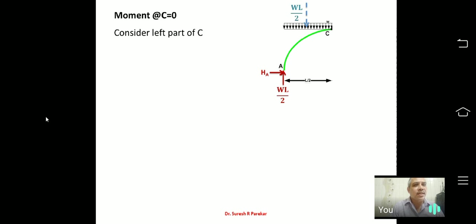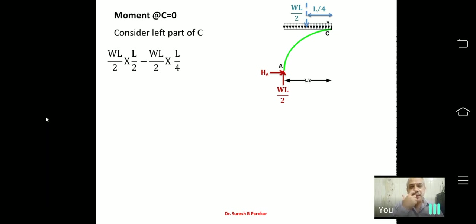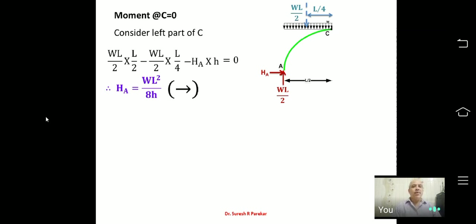Taking moment about C = 0 for the left part: the vertical reaction WL/2 acts over span L/2, and the total load on the left half is WL/2 acting at L/4 from A. So: (WL/2)(L/2) − (WL/2)(L/4) − HA × H = 0, giving HA = WL²/(8H).